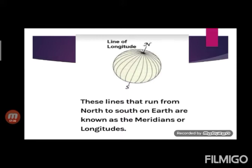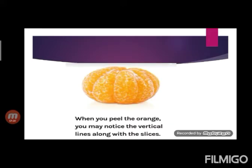To understand this in a better way, let's take an example of an orange. The shape of an orange is like the shape of the Earth and when we peel it, we get lines which look like Meridian of Longitude.